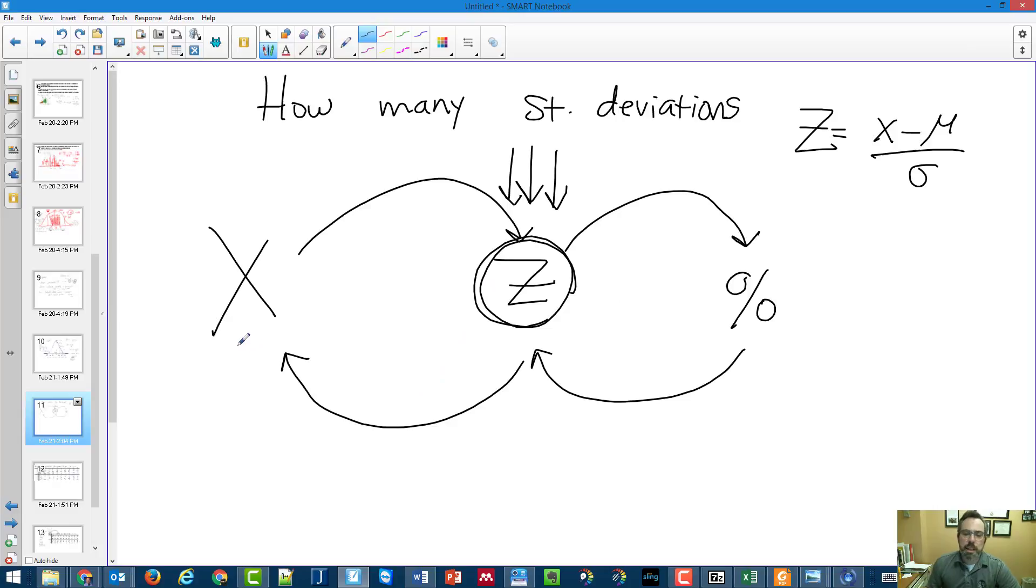You're always going to be asked to find one of these three things. You're either looking for the percent of people, or you're looking for an actual score. Usually when you're doing this, you're going to be starting with a score, going to z, going to percent.